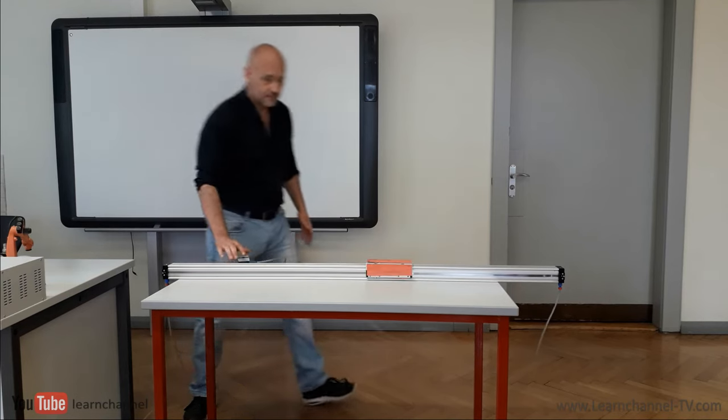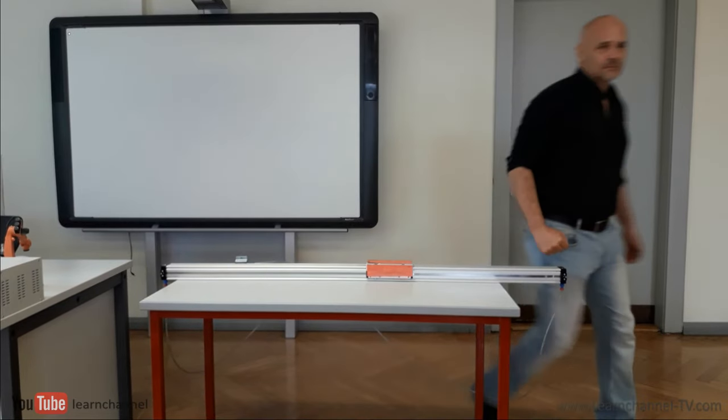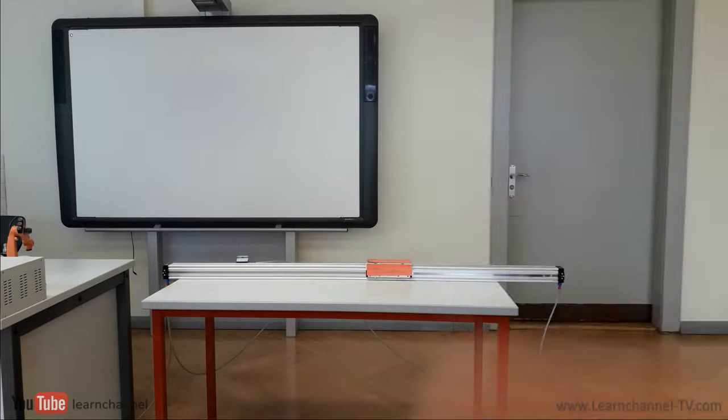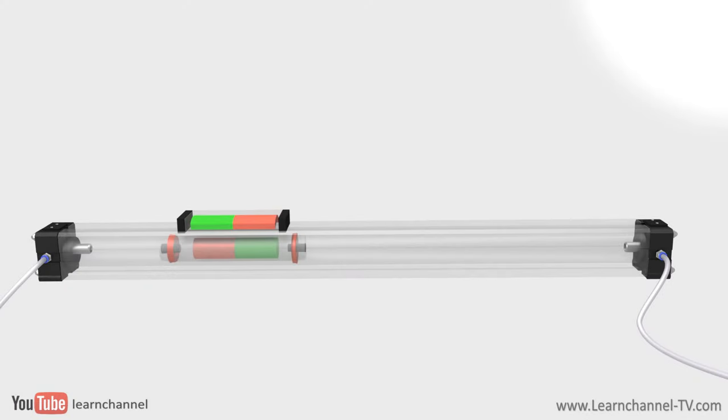Different types of rodless cylinders can be distinguished by the way the piston is connected to the carrier. One principle is the magnetic coupling. Here, the piston and slide are connected together by using permanent magnets. One magnet integrated within the slide, the other one within the piston.